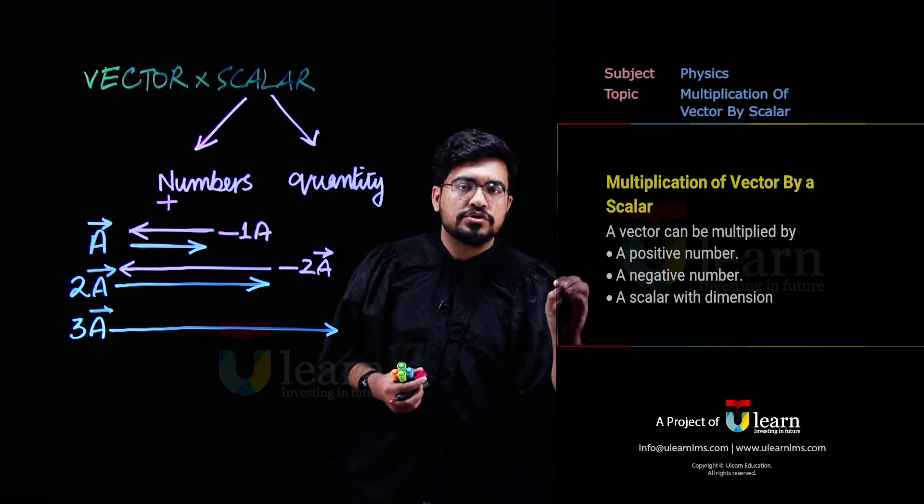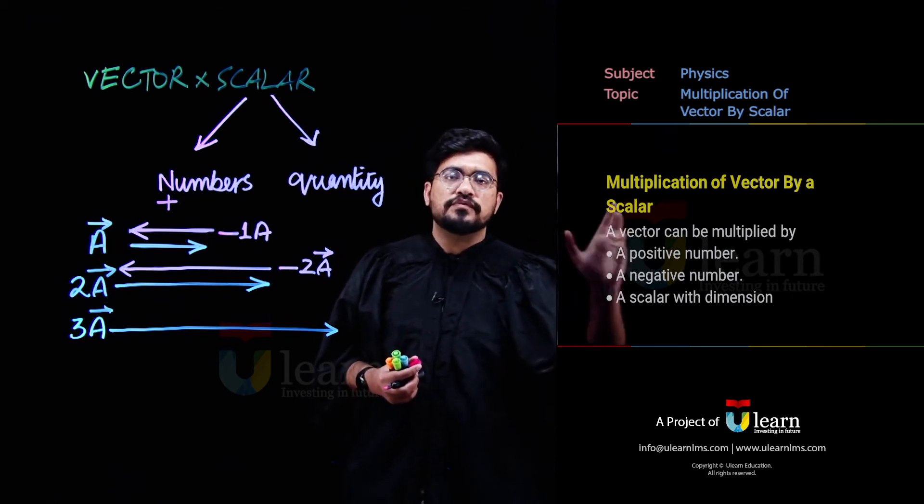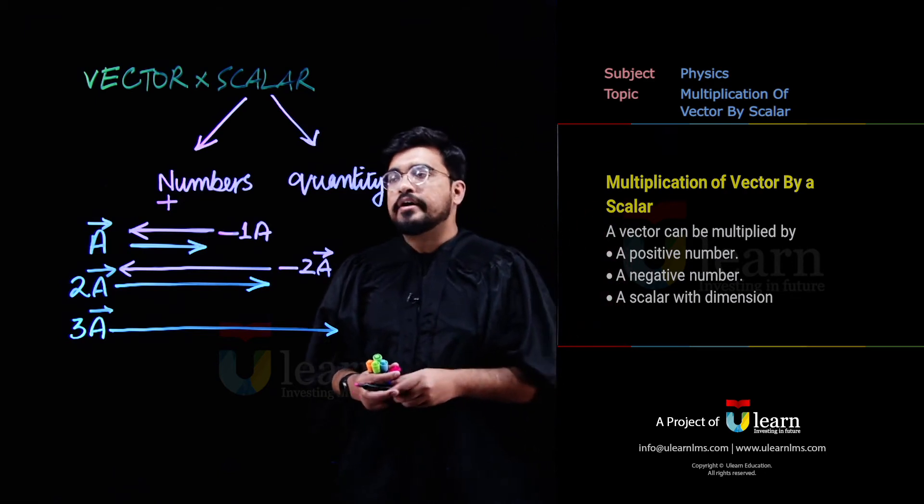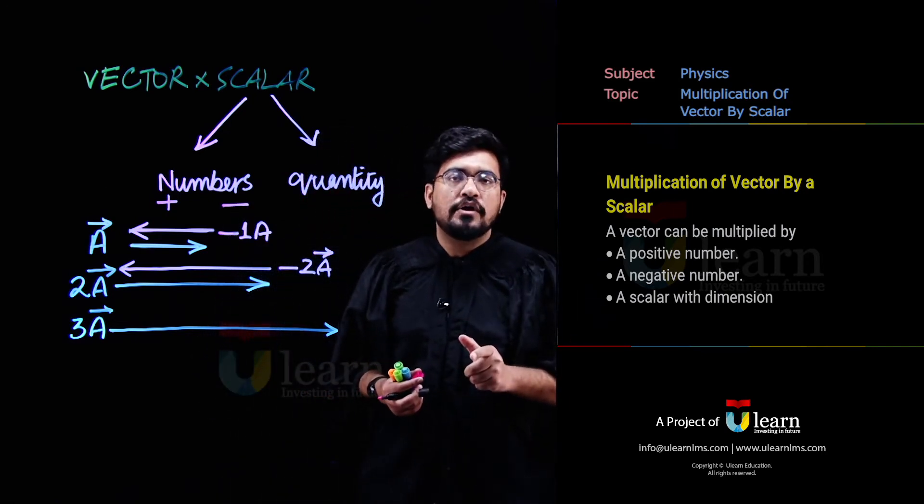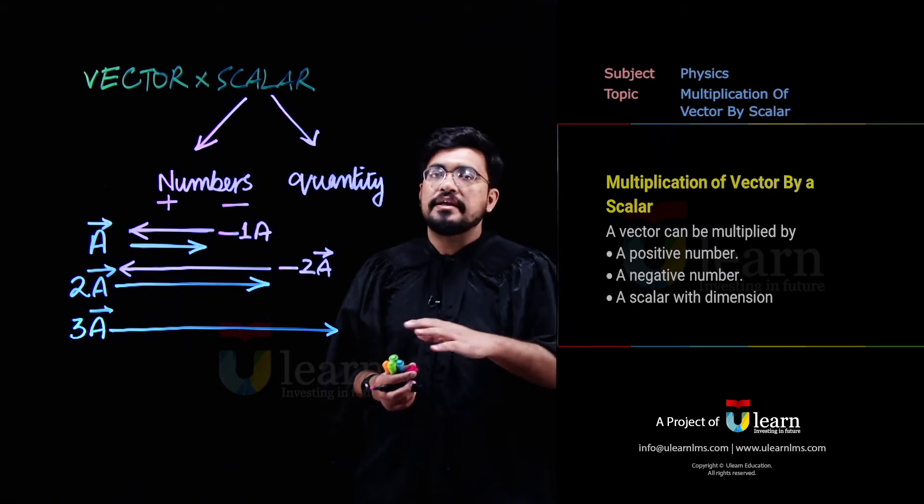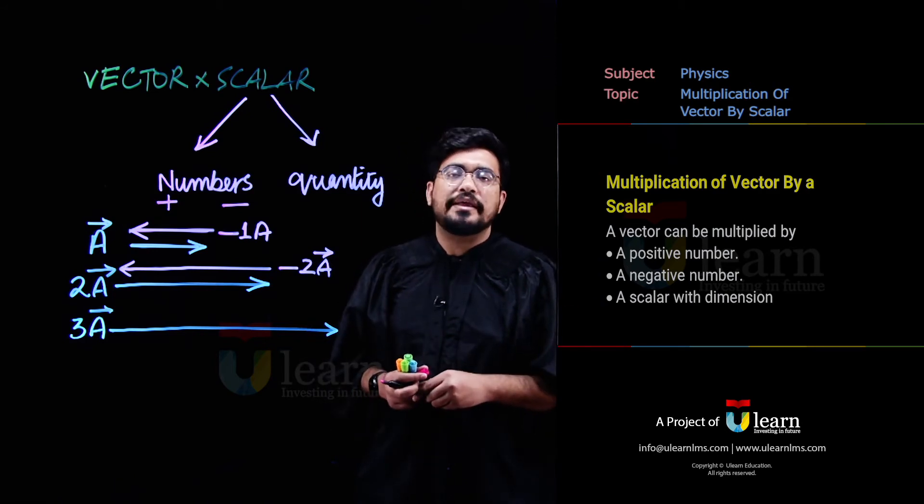Agar wo force hai, force two times, force three times, force four times ho ti jayegi, aur agar wo number negative hoga, toh vector ki sirf direction reverse ho jayegi, magnitude number times change ho jayegi, lekin vector ki nature pe koi fark nahi padega.